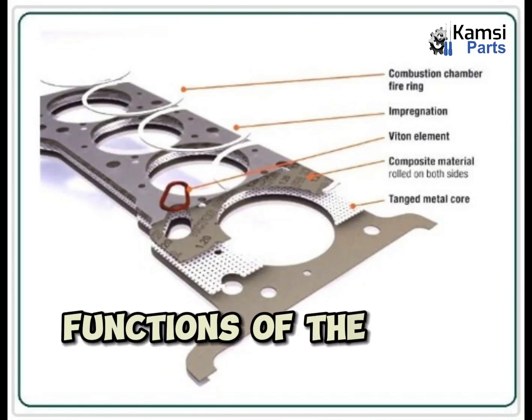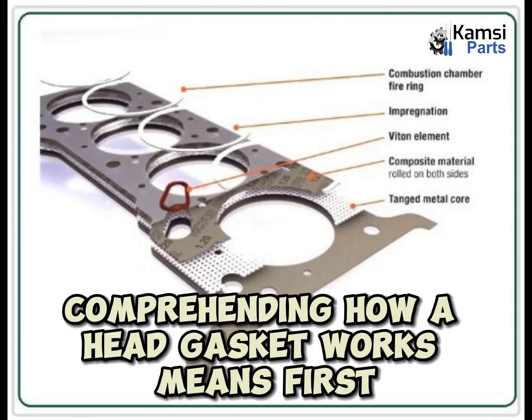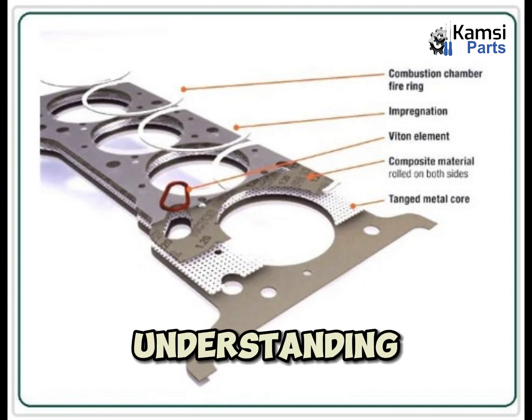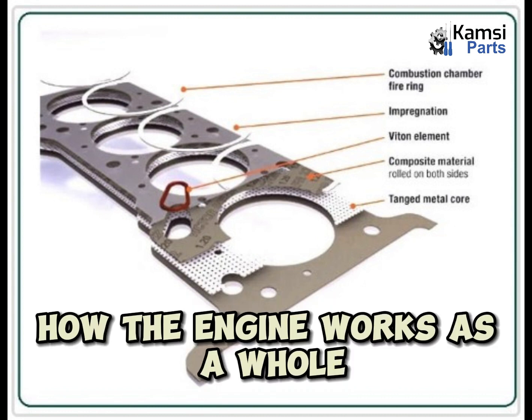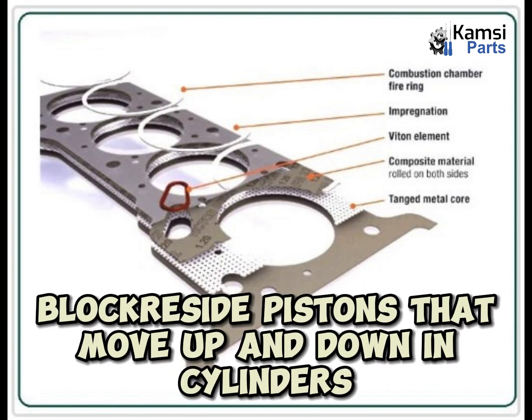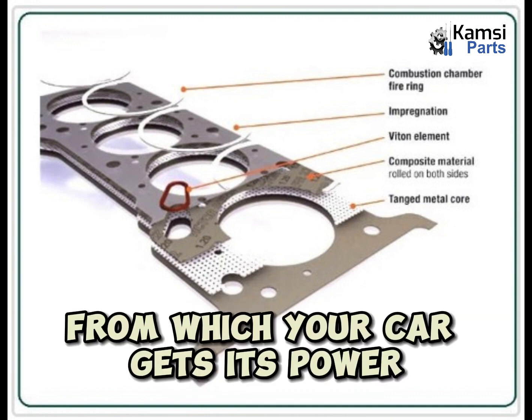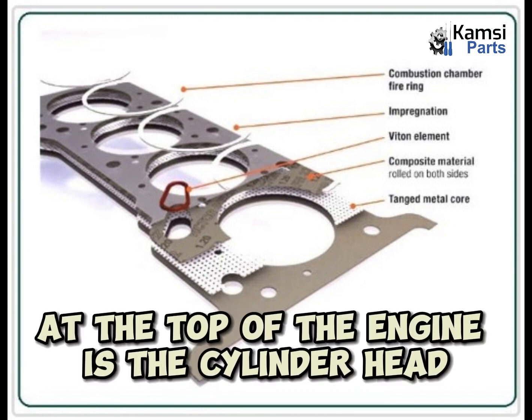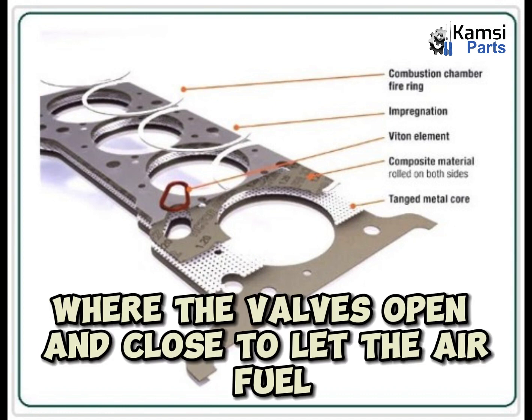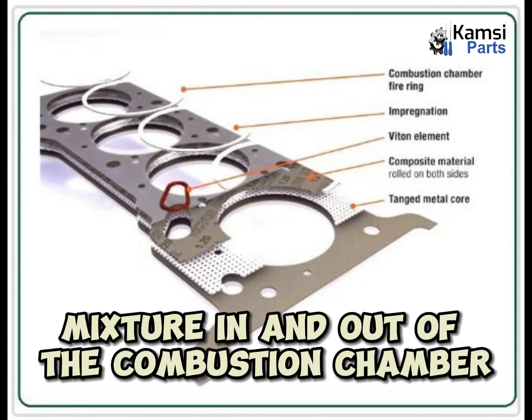Functions of the head gasket. Comprehending how a head gasket works means first understanding how the engine works as a whole. In the engine block reside pistons that move up and down in cylinders; the pistons are connected to a rotating crankshaft, from which your car gets its power. At the top of the engine is the cylinder head, where the valves open and close to let the air-fuel mixture in and out of the combustion chamber.